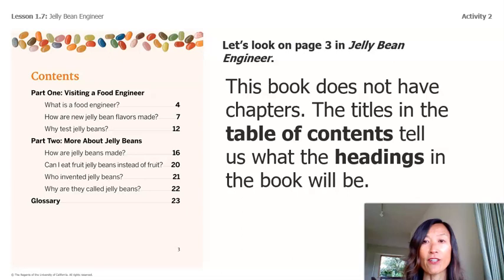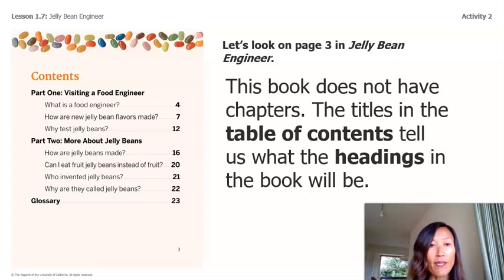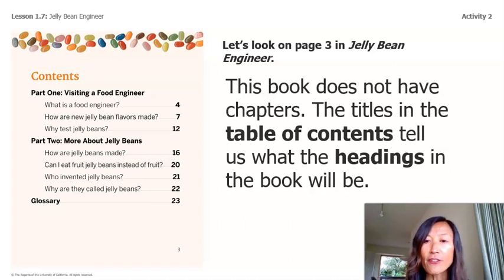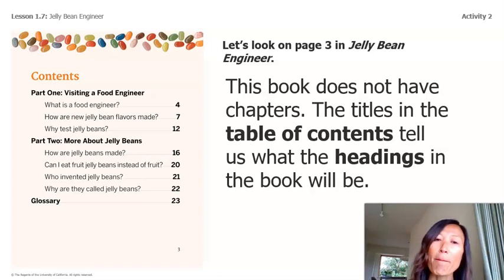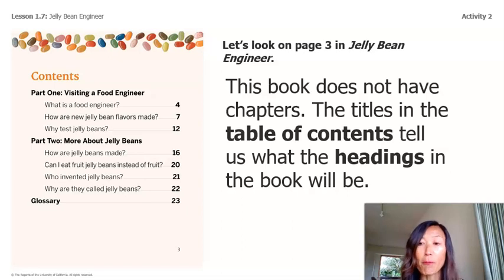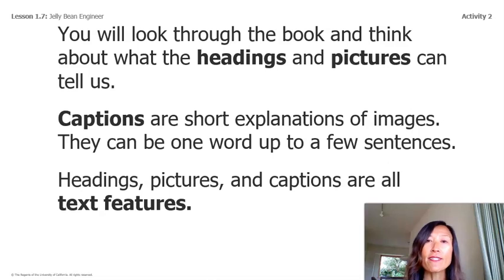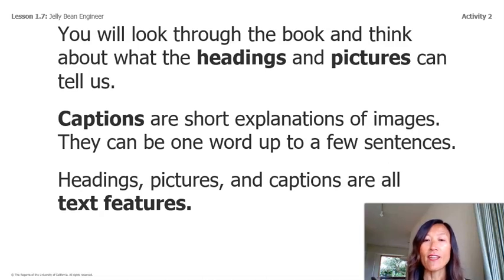On page 3, the book does not have chapters — it has a table of contents that tells us the headings. The book has two parts and a glossary. The first part is 'Visiting a Food Engineer,' covering what a food engineer does, how new jelly bean flavors are made, and why engineers test jelly beans. The second part is 'More About Jelly Beans,' and lastly there's a glossary with definitions for bolded vocabulary words. Headings, pictures, and captions are all text features.